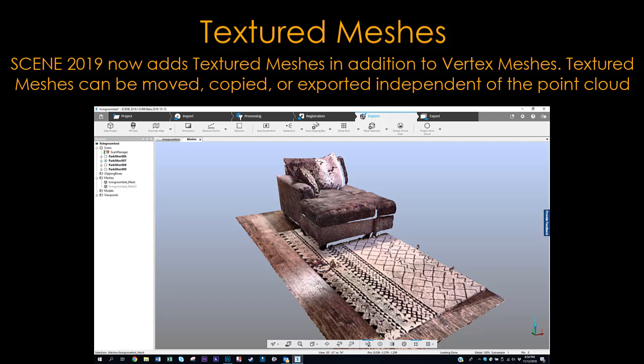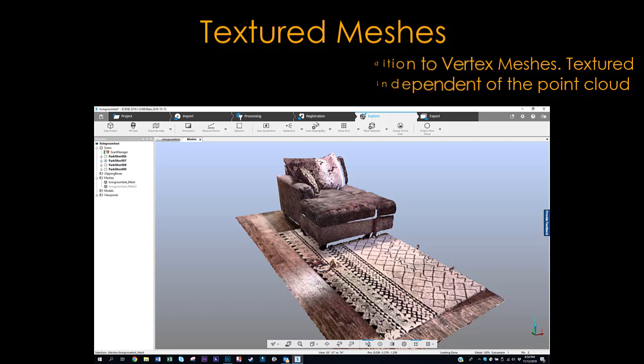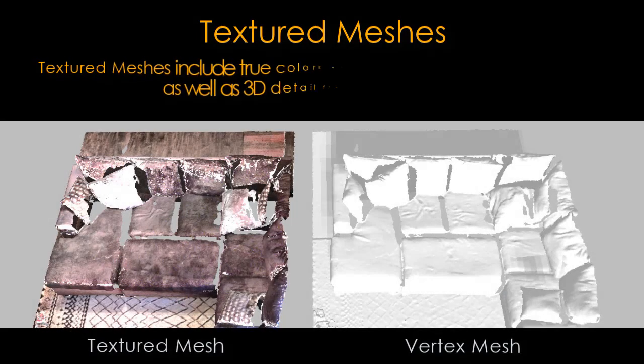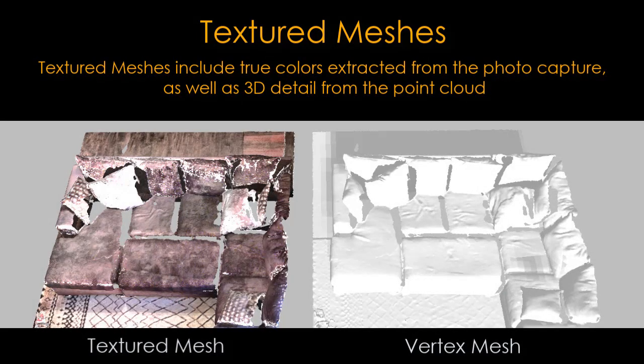Textured meshes: Scene 2019 now adds textured meshes in addition to vertex meshes. Textured meshes can be moved, copied, or exported independent of the point cloud. They include true colors extracted from the photo capture as well as 3D detail from the point cloud.